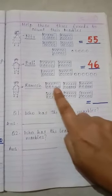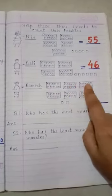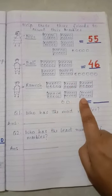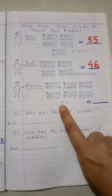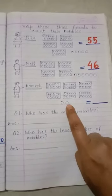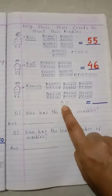Now, Ramesh. 1 tens, 2 tens, 3 tens, 4 tens, 5 tens, 6 tens. And the loose ones? 1, 2. 6 tens and 2 ones. This is 62.